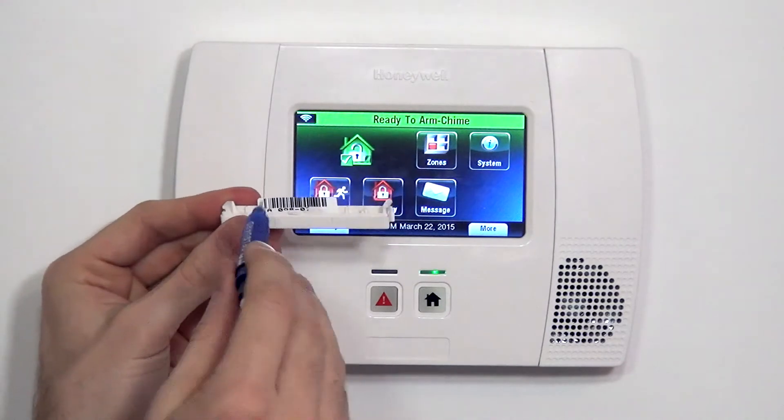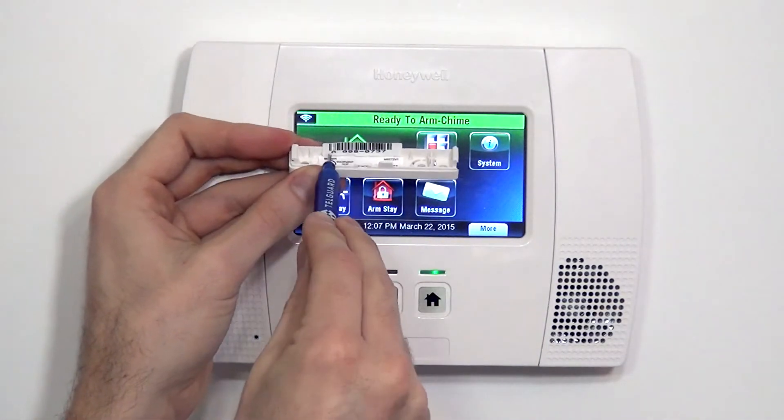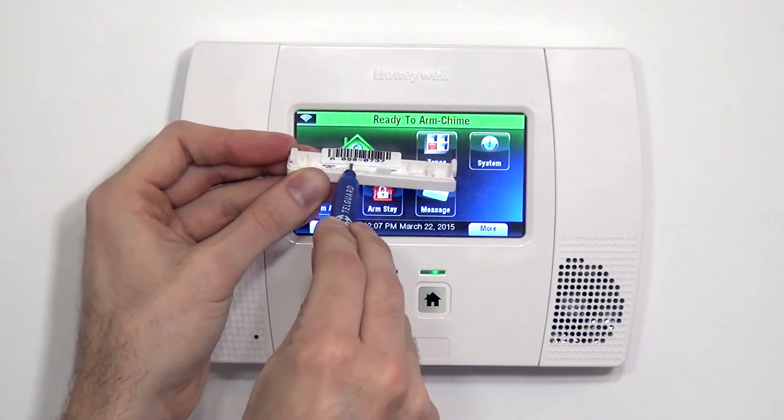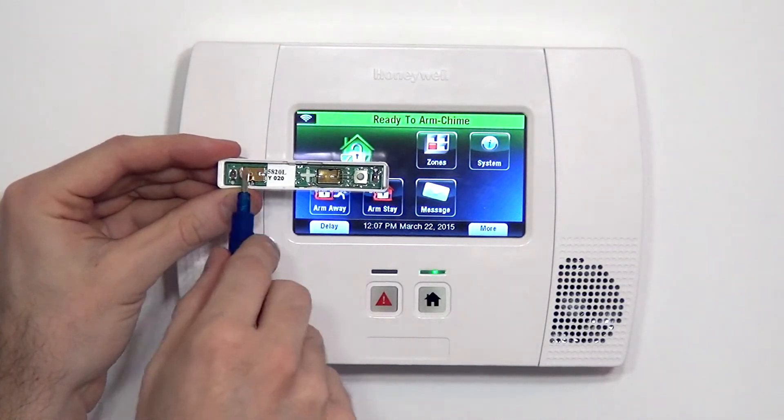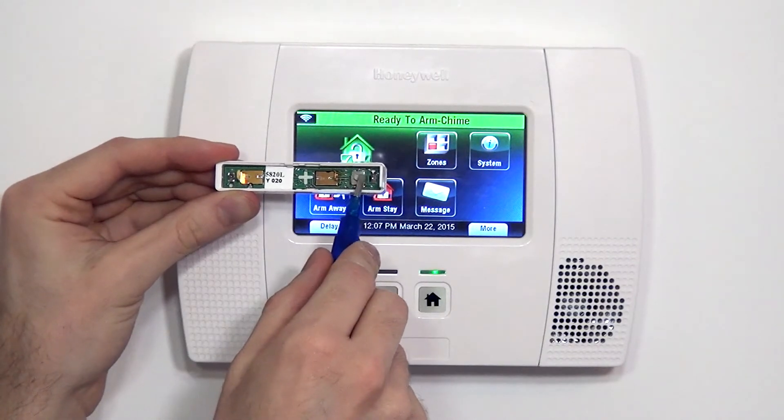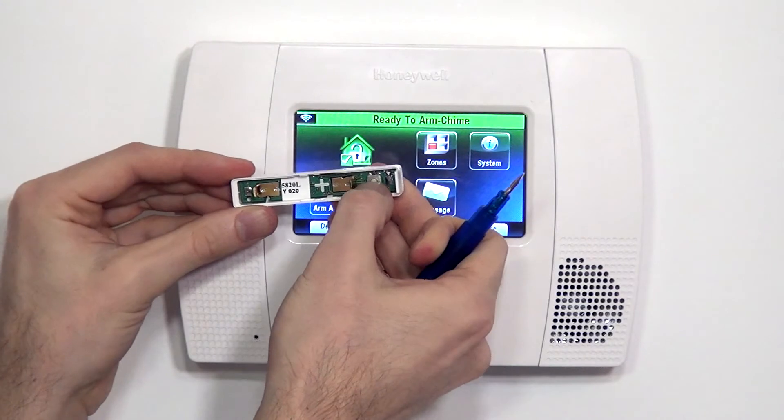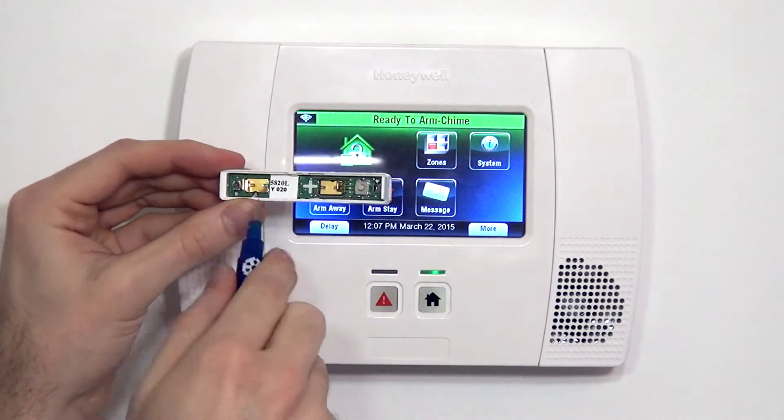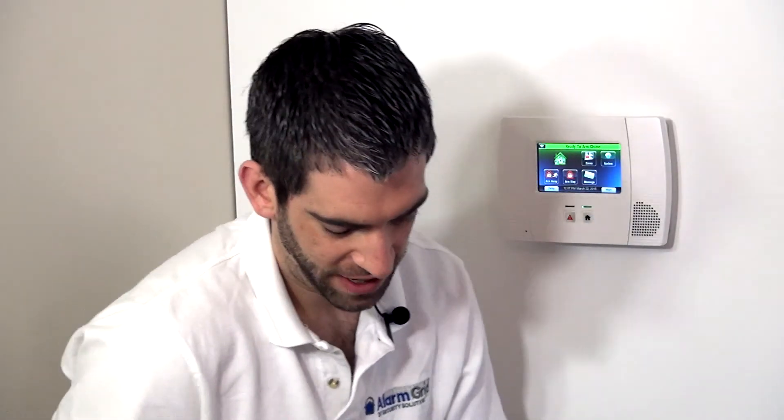This back plate has our serial number. The barcode is showing with an alpha number, 0980737. We have our cover with our circuit board, battery contacts, and tamper switch which would indicate if the cover's popped. We have our model number, 5820L, and our date code of when it was manufactured.